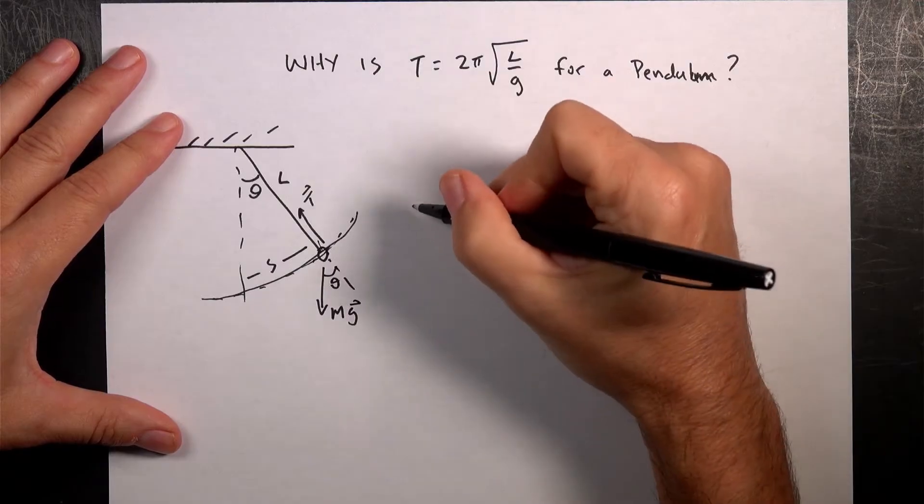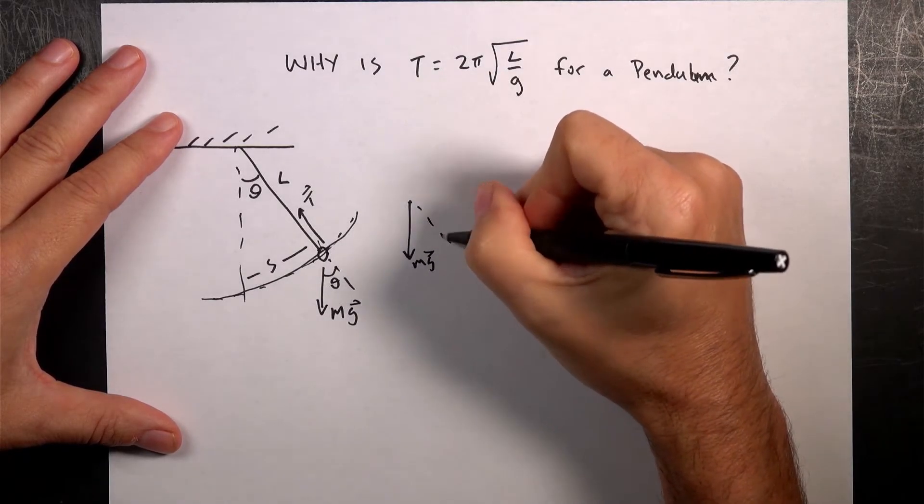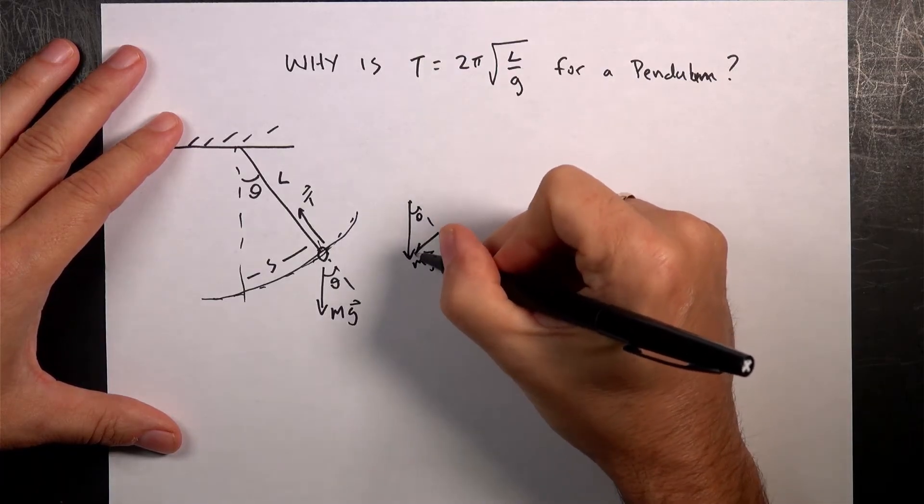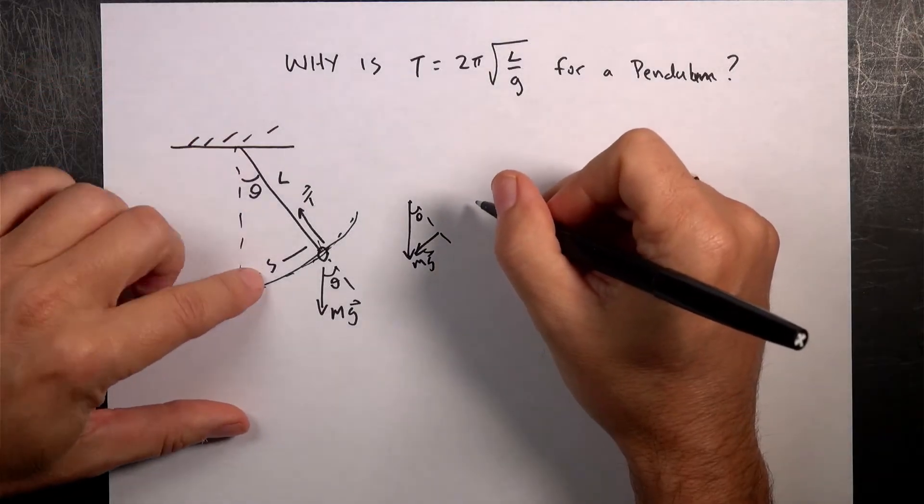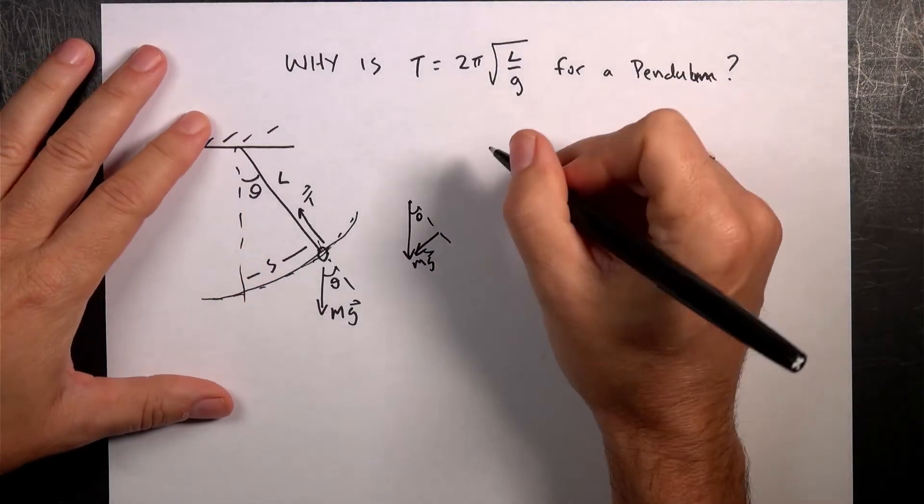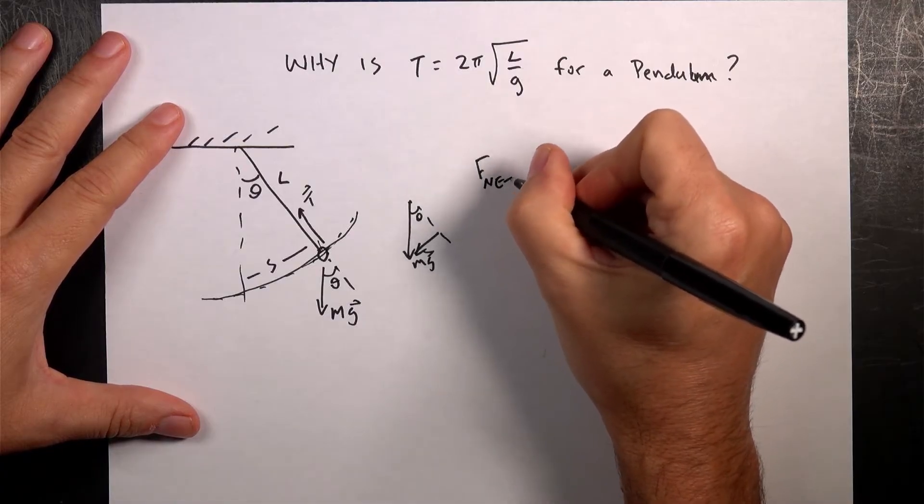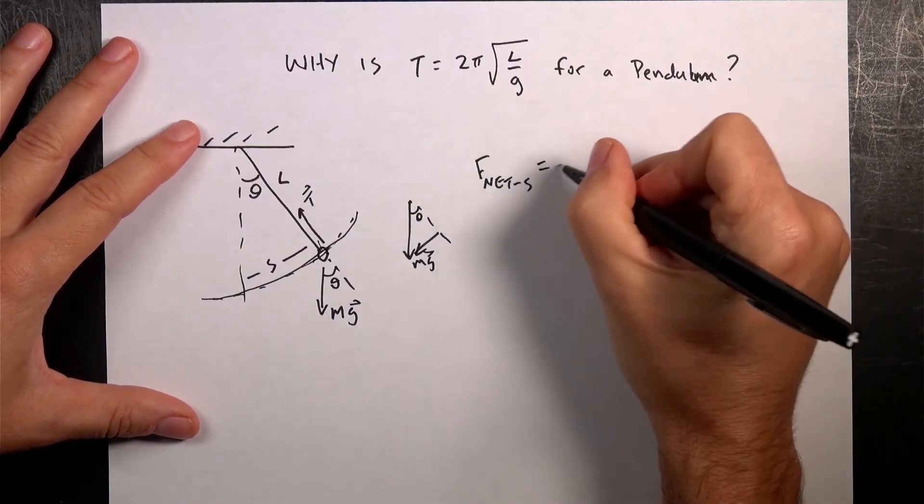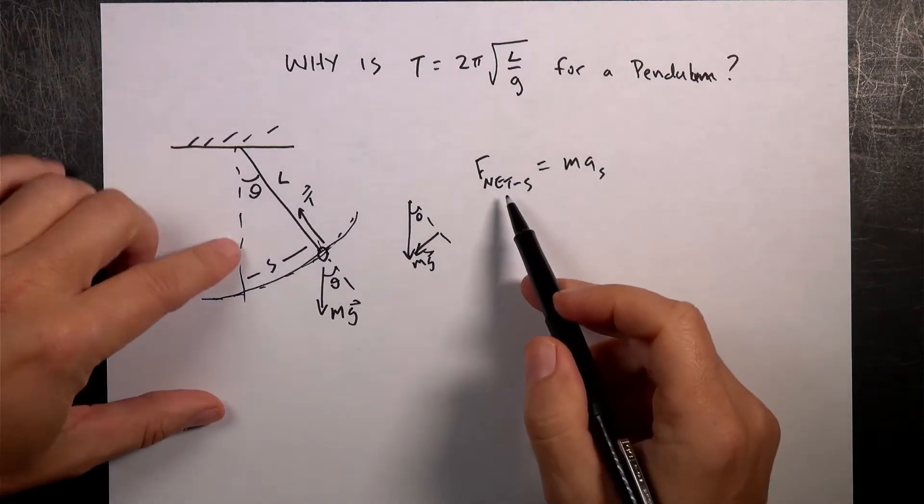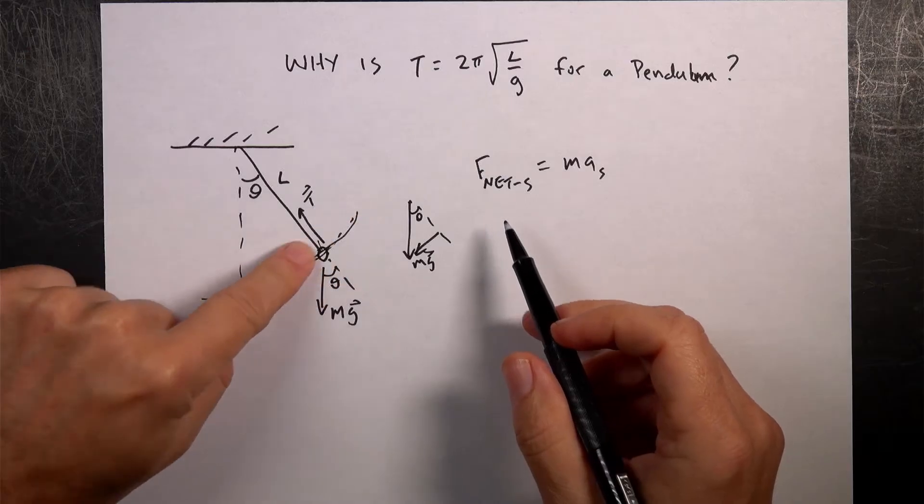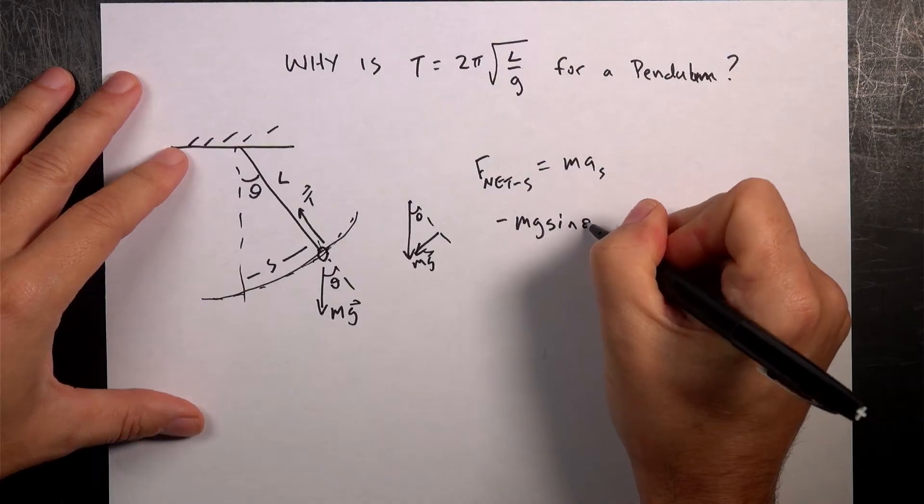Well, the only force that pushes in the S direction is a part of the gravitational force. So I have that angle theta right there. So if I redraw that, it looks like this. Here's mg. There's theta. So this is the component of the gravitational force in the direction of theta. So I can say, if I write Newton's second law, F net S, this is in the S direction, it's going to be MA_S.